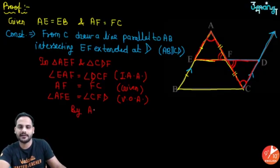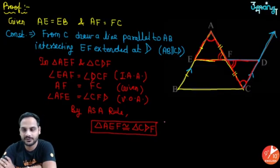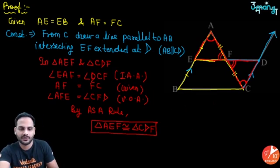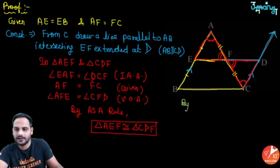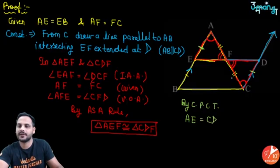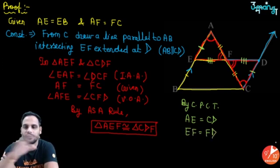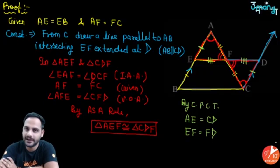Since triangle AEF ≅ triangle CDF by ASA, by CPCT: AE = CD (equation 1) and EF = FD (equation 2).